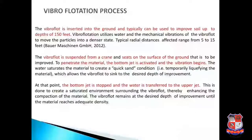Next is the vibro-flotation process. The vibro-float is inserted into the ground and can improve soil to depths of up to 150 feet. It utilizes water and mechanical vibration to move particles into a denser state, with typical radial distances affected ranging from 5 to 15 feet. The vibro-float is suspended from a crane. To penetrate the material, the bottom jet is activated and vibration begins, saturating the material to create a quicksand condition that allows the vibro-float to sink to the desired depth. At that point, the bottom jet is stopped and water is transferred to the upper jet, creating a saturated environment to enhance compression of the material.